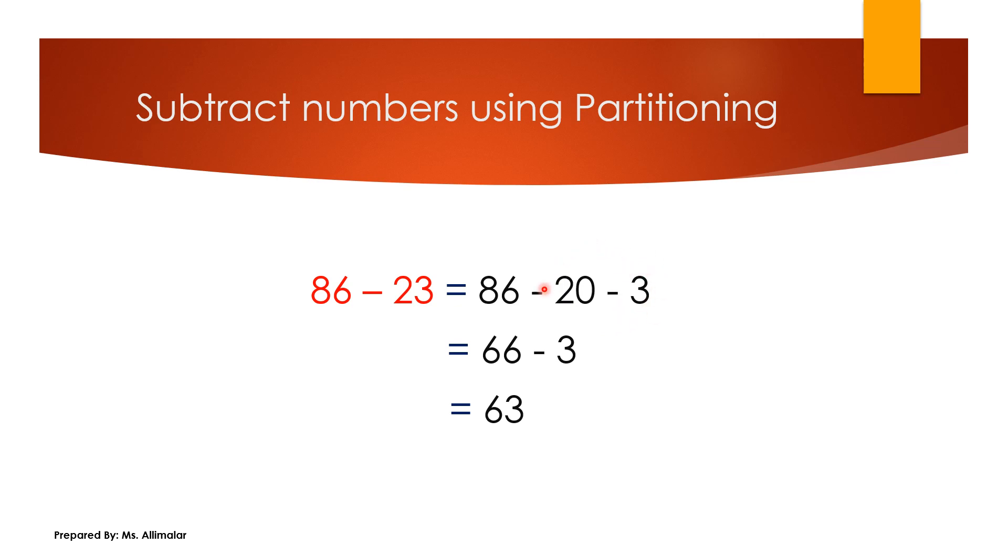So 23 became 20 and 3. This is called partitioning. Partition means they separate it. Clear? Now we are going to take 86 minus 23. After you partition, it will be like this: 86 minus 20 first, and then minus 3. It will be very easy.